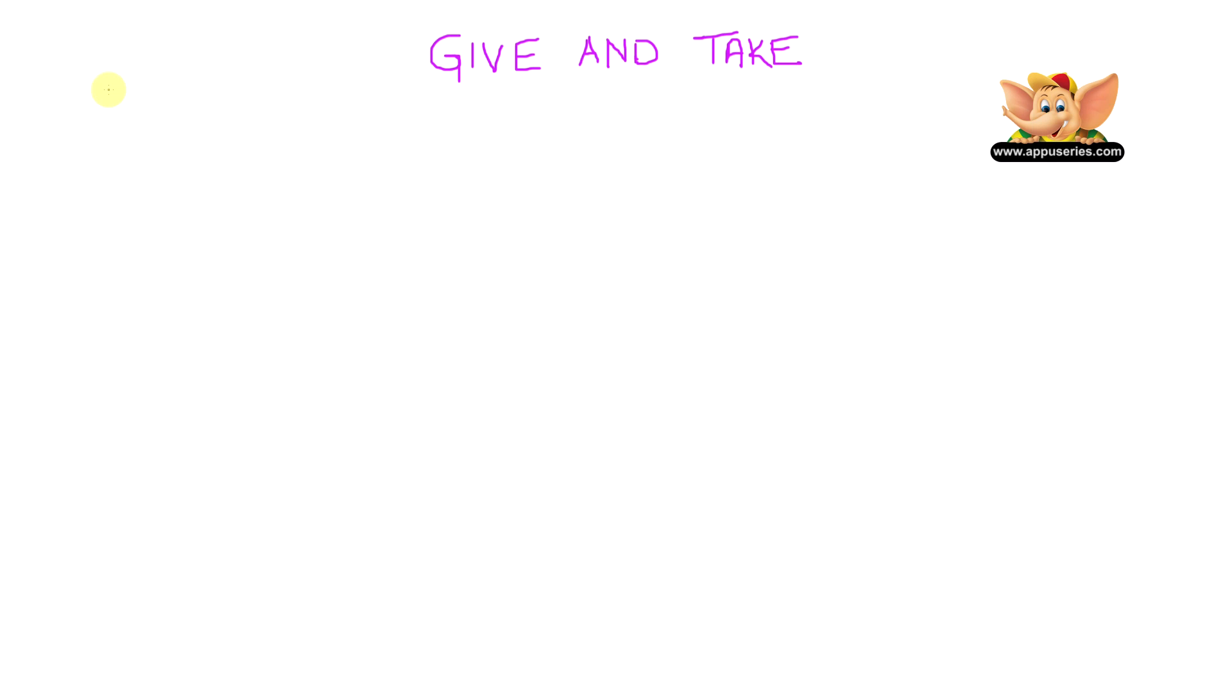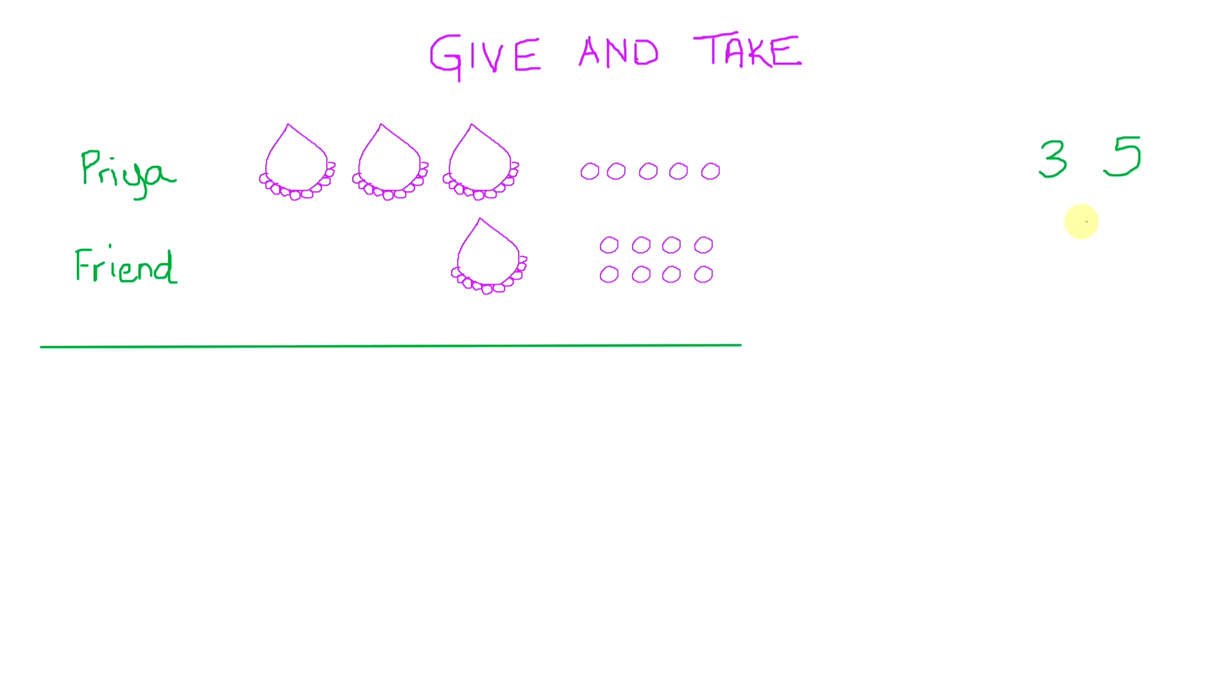Let me give you a different example. Priya had 35 pearls. Let me write that down here. 35 pearls means 3 necklaces and 5 loose pearls. Now she gave away 18 pearls to her friend. So that's 1 necklace and 8 loose pearls. Let me write that in numbers here.